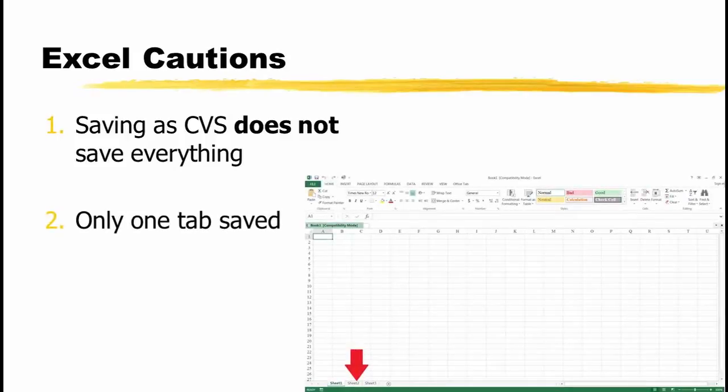The second is that saving an Excel file as a CSV file only saves the current tab. The worksheet on the screen has three tabs: Sheet 1, Sheet 2, and Sheet 3. Sheet 1 is the current tab and it would be the only one saved in a CSV file. We will return to these two items in a moment.